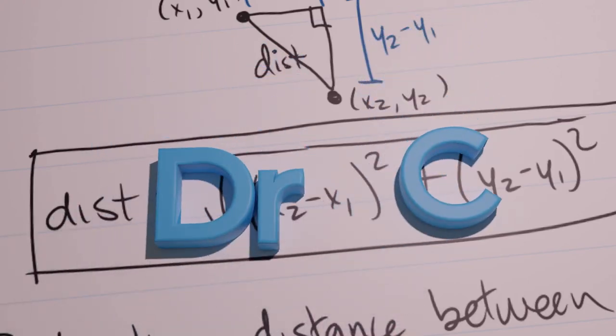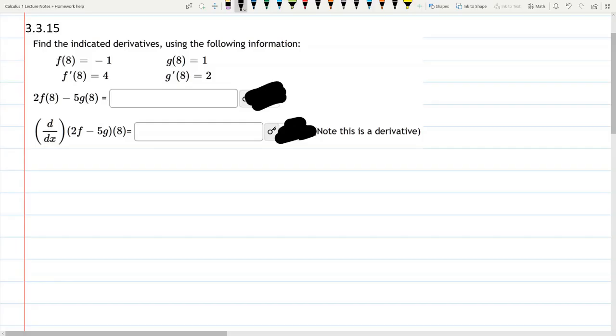In this question, we are supposed to compute some derivatives. This one may seem a little strange because they didn't actually give us the f and g functions. What they did is gave us the function values and the derivative values at certain x values. All the x values are 8, which means the x values better be 8 in our problem, which they are. This should be enough information. Let's go ahead and do the first part.